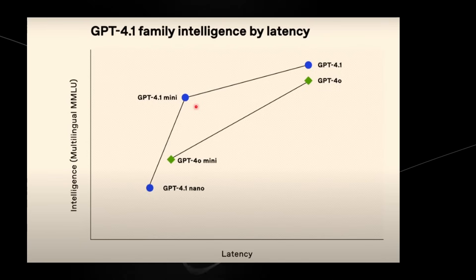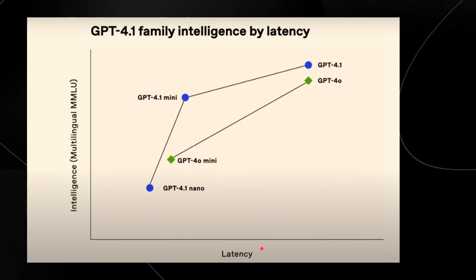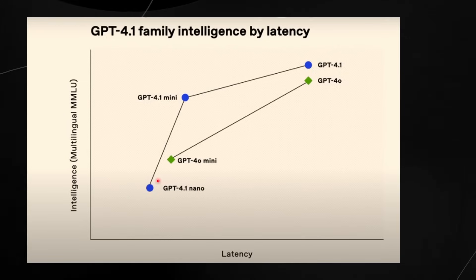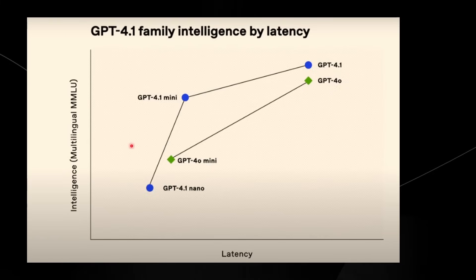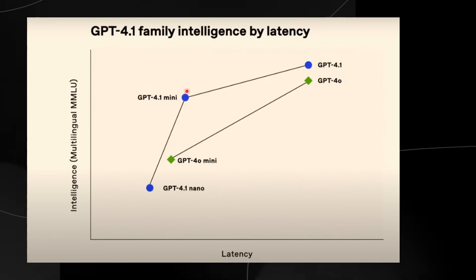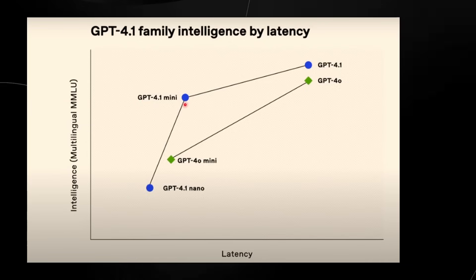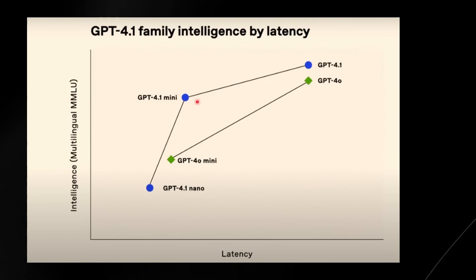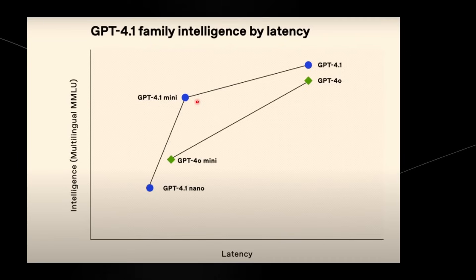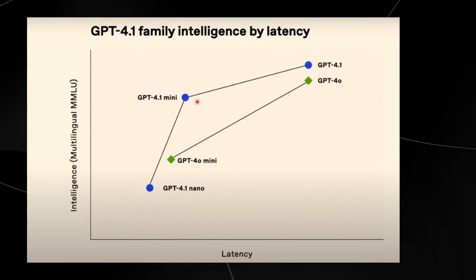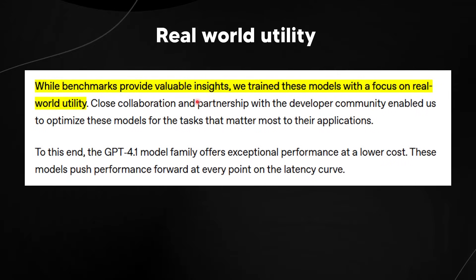GPT-4.1 Nano is a really effective tool balancing latency and intelligence, while GPT-4.1 Mini is probably the most effective overall — relatively smart, fast, and cheap. I'd say GPT-4.1 Mini is probably one of the biggest contenders to Gemini 2.5 Flash, as that model is also dirt cheap with remarkable intelligence.